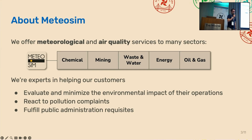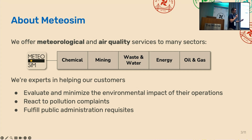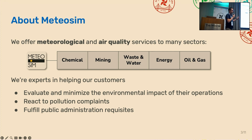What do we do in Meteosim? We offer weather and air quality services. We work in many lines of work, but in the environment line, we work in these particular sectors, mainly in chemical industries, mining, and oil and gas companies. We offer many services, but one of them is a platform, a web page that allows our customers to plan their operations, minimizing the environmental impact. They can also react to pollution complaints or events that could come from citizens or from the public administration.